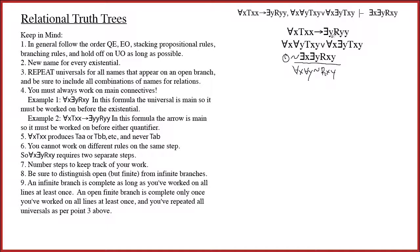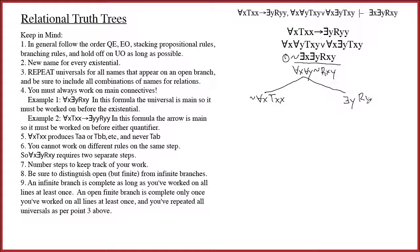So I really ought to work on one of these two formulas. It's not immediately obvious whether I should do the arrow or the wedge first, so I'm not going to overthink it — I'll do the arrow first and put in a branch. I make a nice wide branch to give plenty of room to grow. On one side I negate the antecedent: not for all x Txx. On the other side I put the consequent: there is a y Ryy.